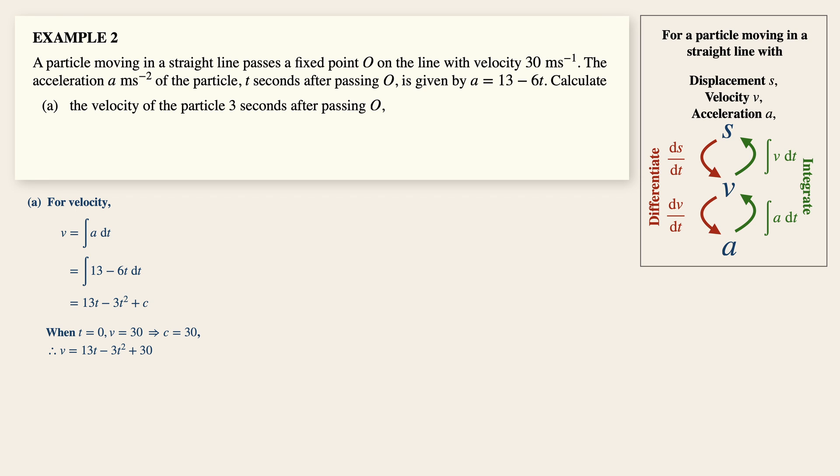So always answer to the question when t is equals to three, v is obtained by substituting t equals to three into this equation here. And this gives us a value of 42. Thus, the velocity is 42 meters per second.